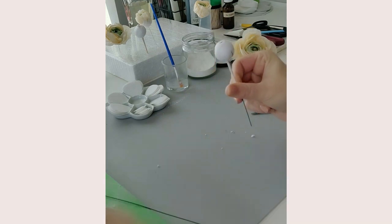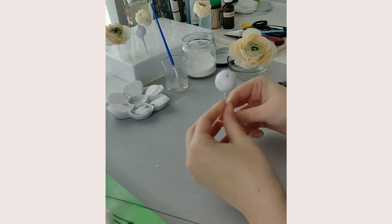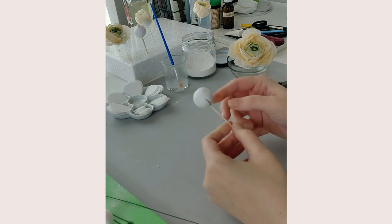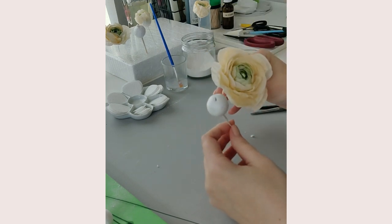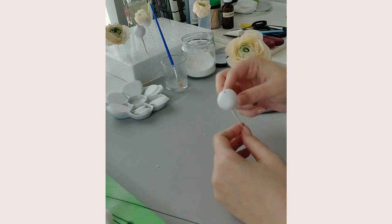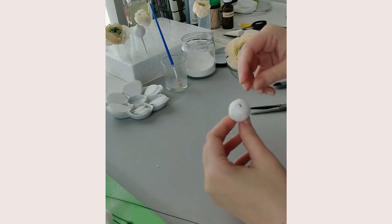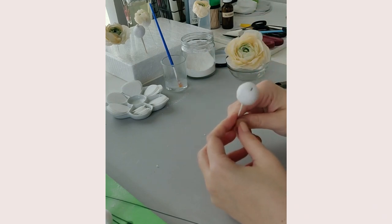And now I have my styrofoam center. And to make a ranunculus flower like I have here, I'm going to cover this in wiffy paper, let it dry, and then it is going to be ready to use.